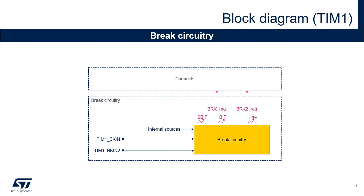The purpose of the brake function is to protect power switches driven by PWM signals. The two brake inputs are usually connected to fault outputs of power stages and three-phase inverters. When activated, the brake circuitry shuts down the PWM outputs and forces them to a predefined safe state. Regarding TIM1, the brake features two channels: a brake channel, which gathers both system-level fault — clock failure, parity error — and application fault from input pins and built-in comparator, and can force the outputs to a predefined level after a dead time duration. A brake 2 channel, which only includes application faults, can force the output to an active state.